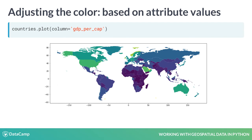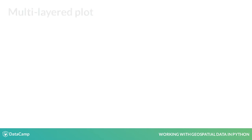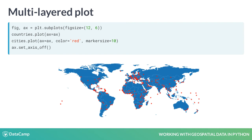Notice that we also specified a figure size — the width and height in inches. Next, we often want to combine multiple layers of geometries in a single plot. For this, we can use the ax keyword of the plot method.